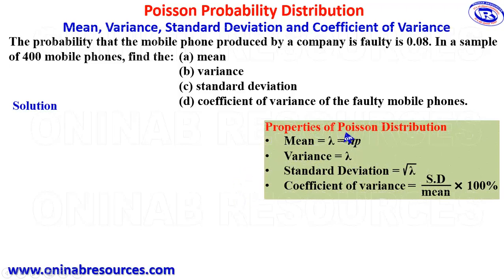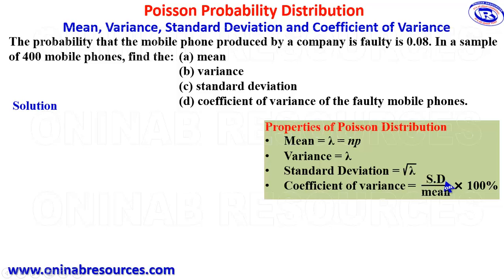We bring in the properties of Poisson distribution. The mean is lambda, which is also equal to np, where n is the total population and p is the probability of success. The variance is also lambda, meaning the mean equals the variance. Standard deviation is the square root of lambda, and the coefficient of variance is the standard deviation divided by the mean, multiplied by 100 percent.